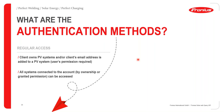Regarding authentication: in the regular access method, a client's email address is linked to the PV system, requiring user permission. All systems connected to the account — by ownership or granted permission — can be accessed. To use the API, you need a SolarWeb account and must add your PV system using the inverter's unique serial number. You then contact Fronius to sign a contract enabling API queries on SolarWeb.